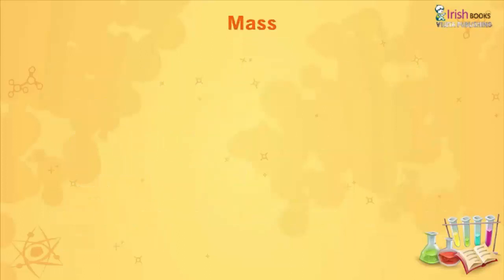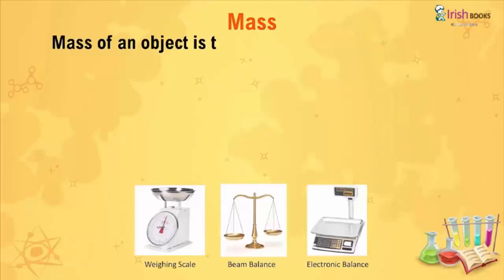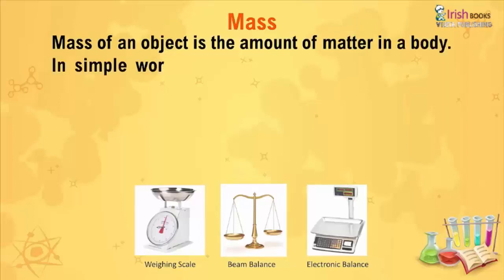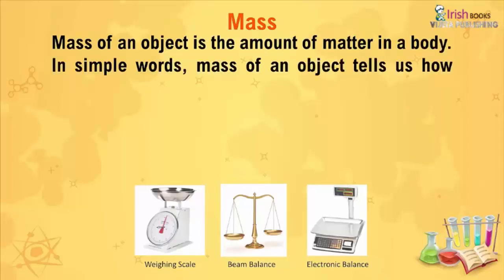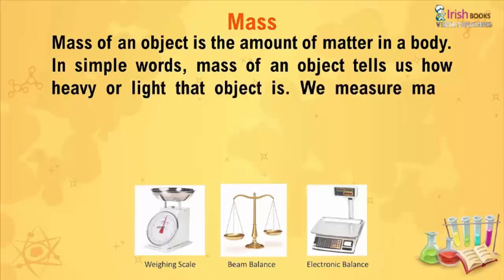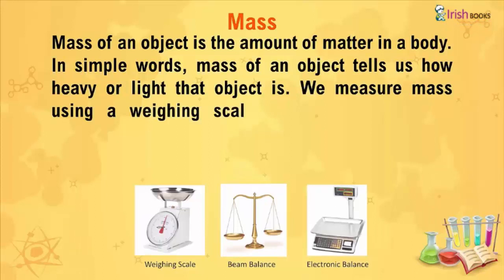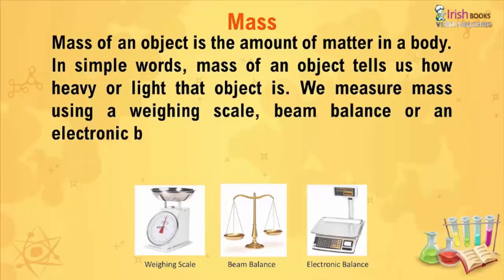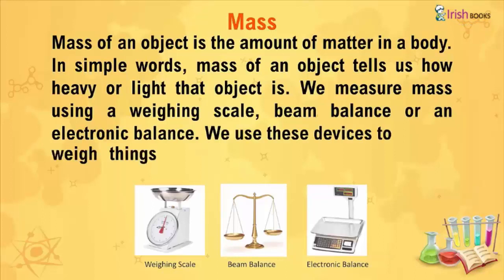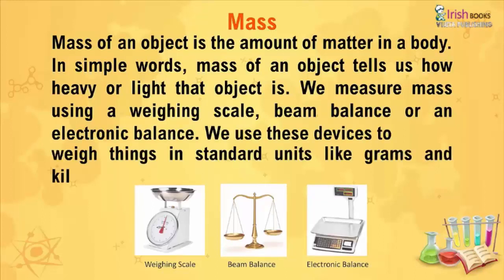Mass: Mass of an object is the amount of matter in a body. In simple words, mass of an object tells us how heavy or light that object is. We measure mass using a weighing scale, beam balance, or an electronic balance. We use these devices to weigh things in standard units like grams and kilograms.